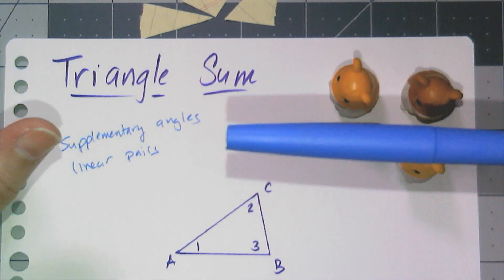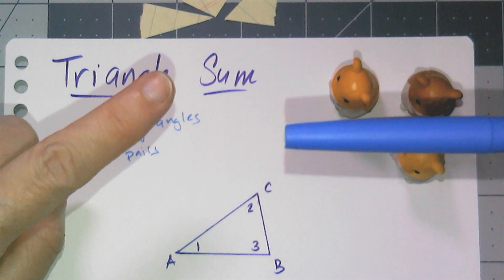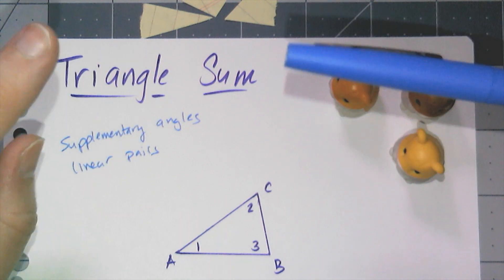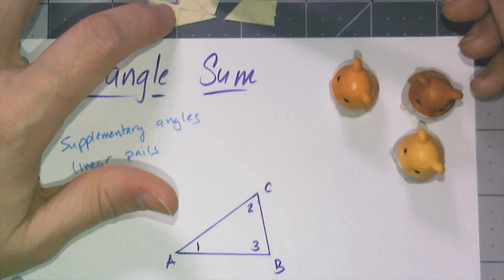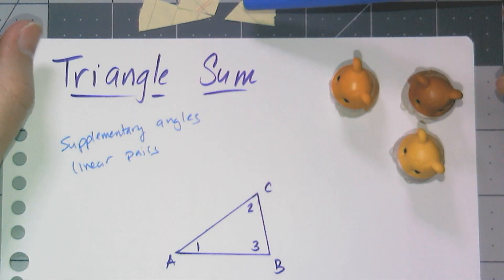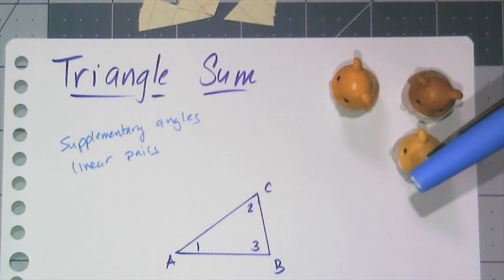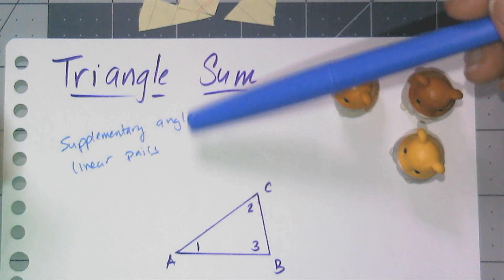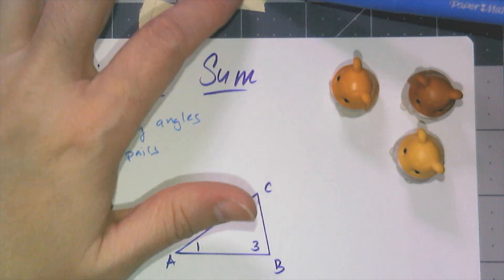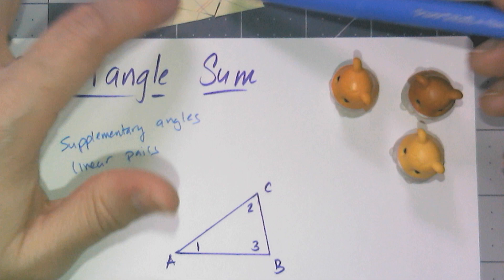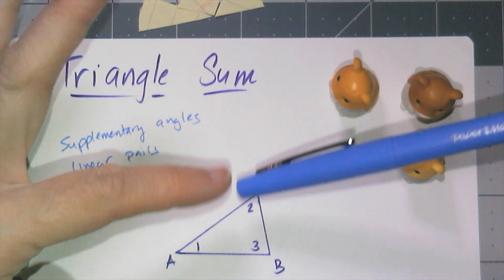But I can remember one of the things I can construct is the sum of two angles, so what I can do is I can add these two angles together to create another angle, and then this angle and that angle are going to be supplementary and linear pairs. So I have to somehow get three angles, the three angles of the triangle, lined up like that.